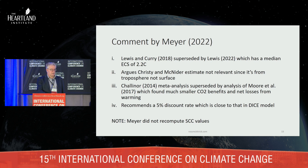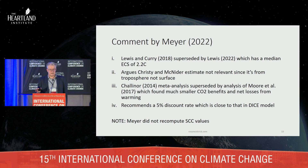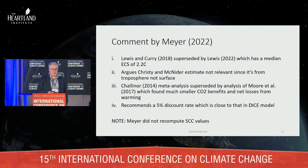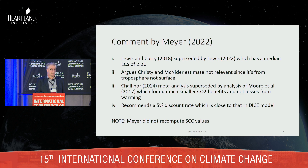A comment was published last year by Philip Meyer, a U.S. government employee. He pointed out that the Lewis and Curry 2018 paper has been superseded by a new Nick Lewis study with a median ECS of 2.2 degrees. He argued the Christy-McNider estimate isn't really relevant because people live on the surface, not the troposphere. He also argued that the Chalinor meta-analysis has been superseded by Moore et al., which found much smaller CO2 benefits and net losses from warming. He suggested the DICE model's close-to-5% discount rate would be appropriate, but did not recalculate the social cost of carbon estimates himself, so we do it for him.